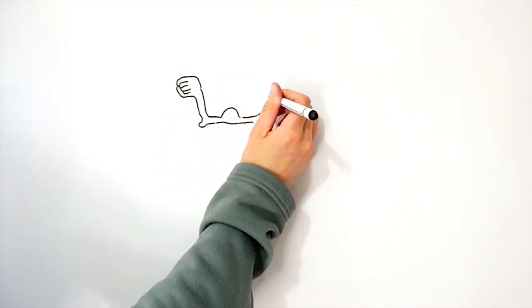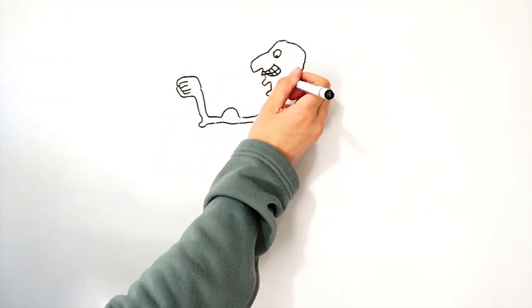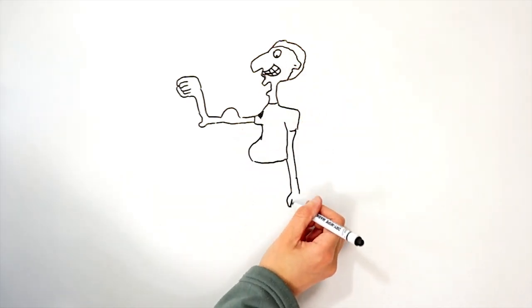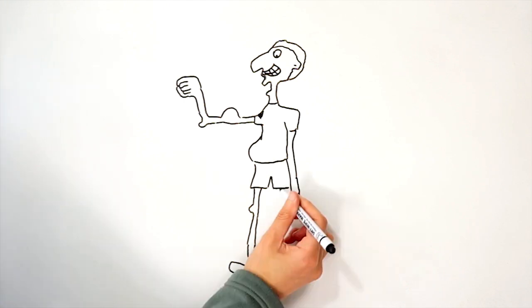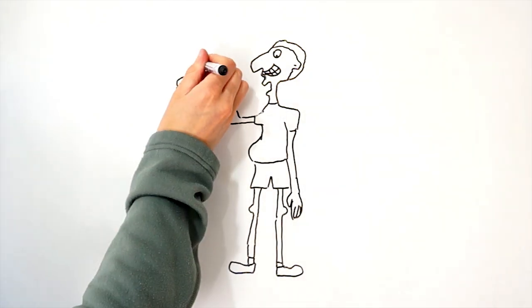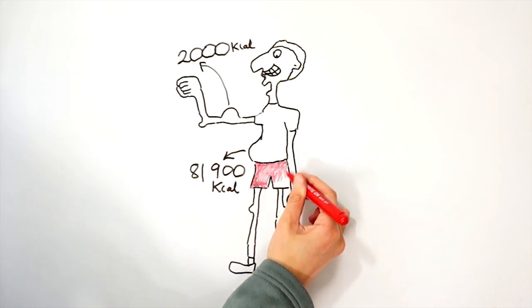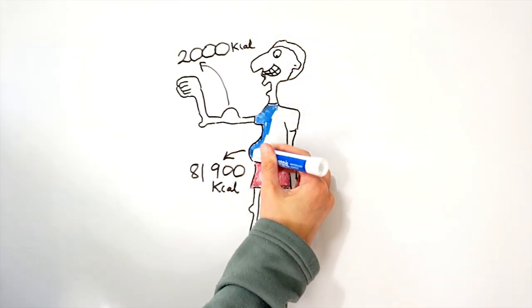The amount of time you can survive without food can be calculated from the amount of stored energy in the body. The average well-fed adult will store about 2,000 kilocalories of glycogen in their liver and muscles. In addition to this, an average male with average body fat will store about 81,900 kilocalories of energy in usable fat stores.